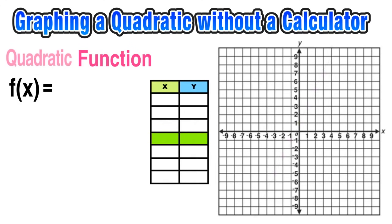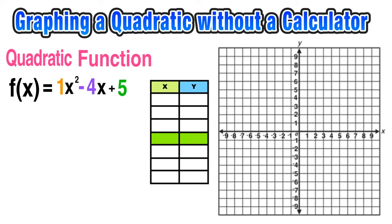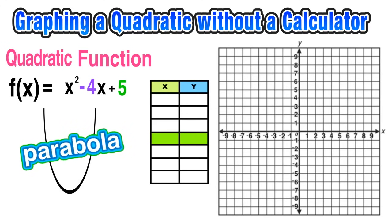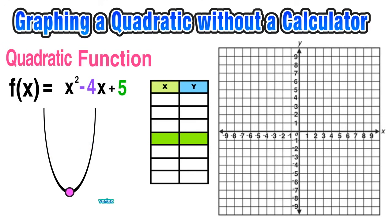Now we want to extend our understanding and develop a strategy for graphing quadratic functions, which are of the form ax squared plus bx plus c. For example, replacing a, b, and c with 1, negative 4, and 5 gives us f of x equals x squared minus 4x plus 5. We should also be familiar with the fact that a quadratic function has a U-shaped graph called a parabola. With a quadratic function, the important point is the vertex — that turning point.